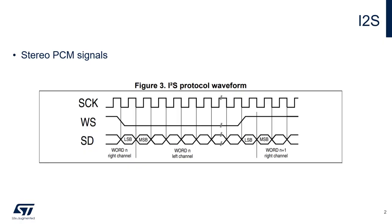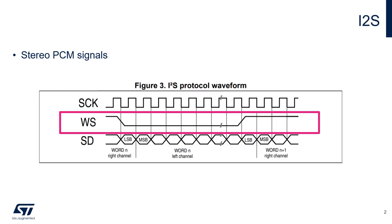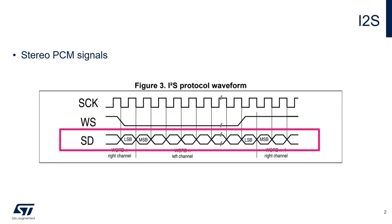The I2S standard is originally used to transmit stereo PCM data. The standard and the bus is composed of three signals: a clock line which defines the timing of the bit transmission on the bus, a control signal which is used to determine if the word being sent is the right or the left of the stereo flow, and a data line on which the actual data bits are transmitted synchronously with the clock.